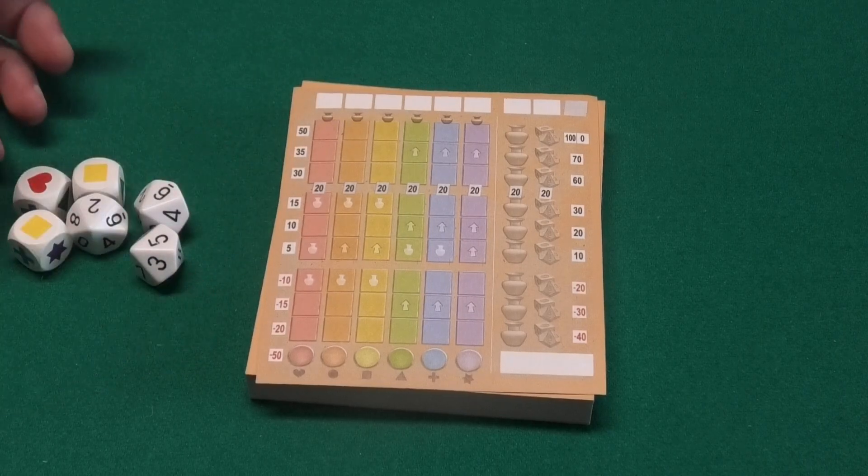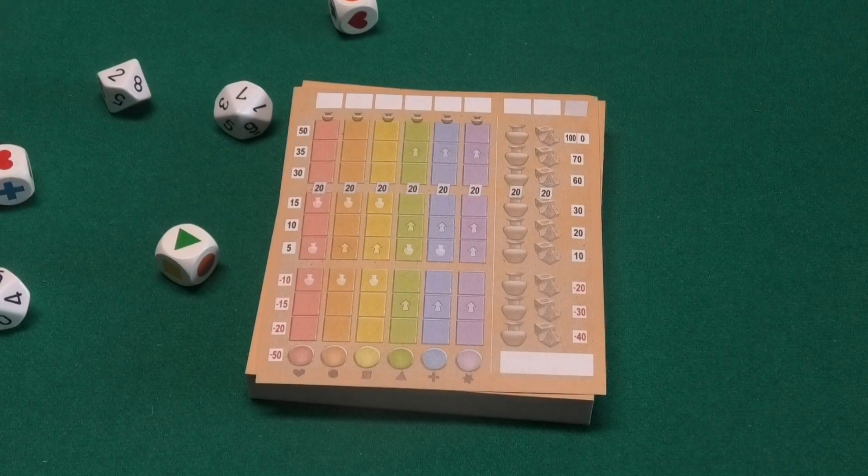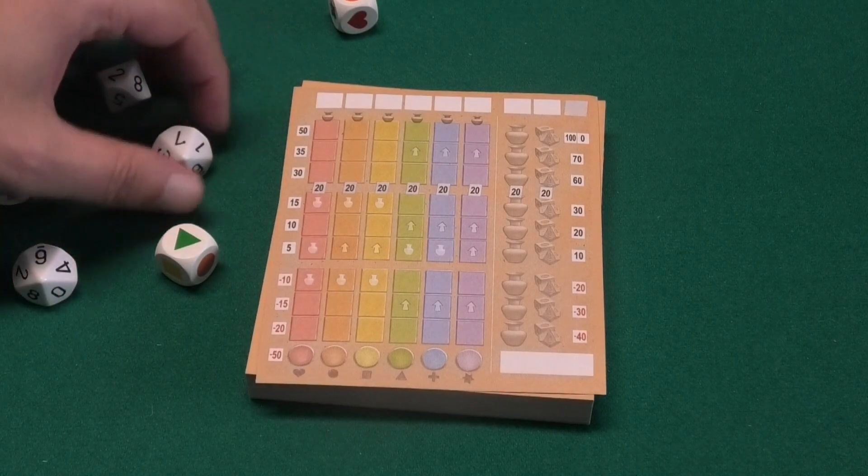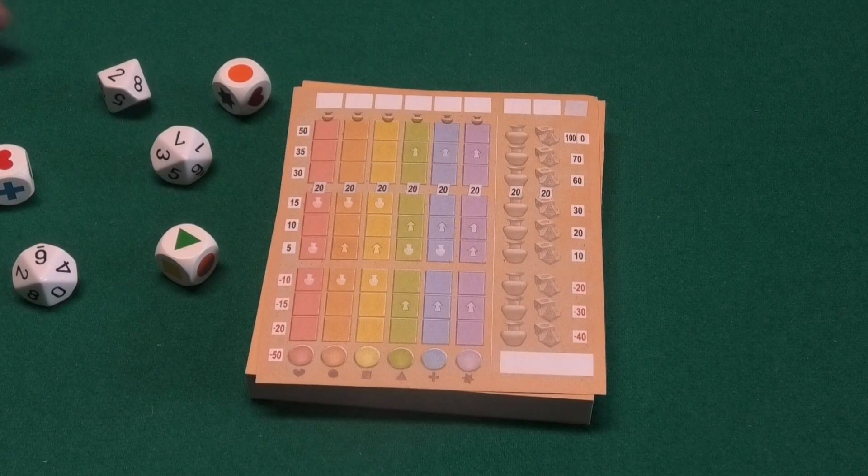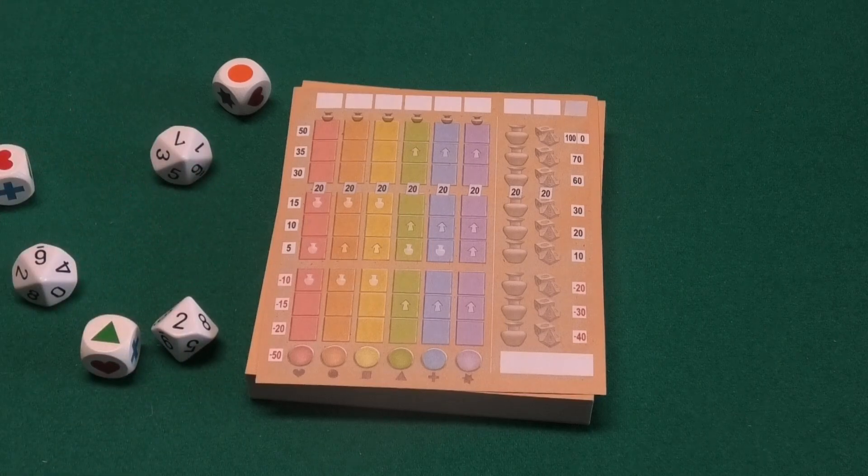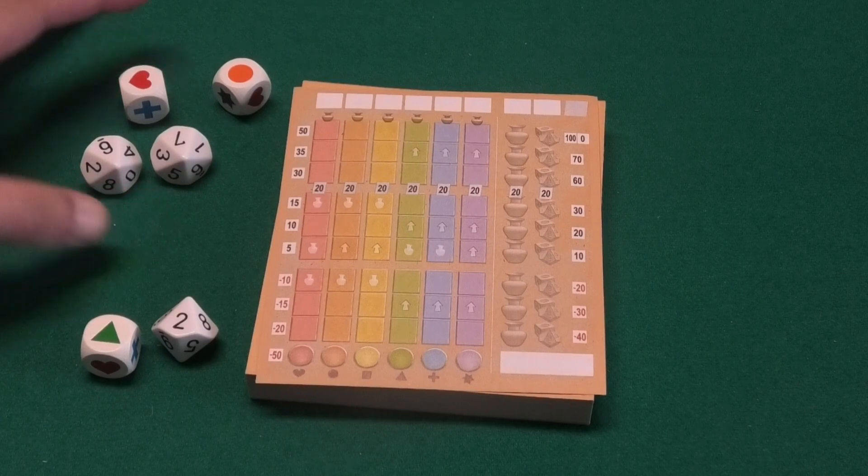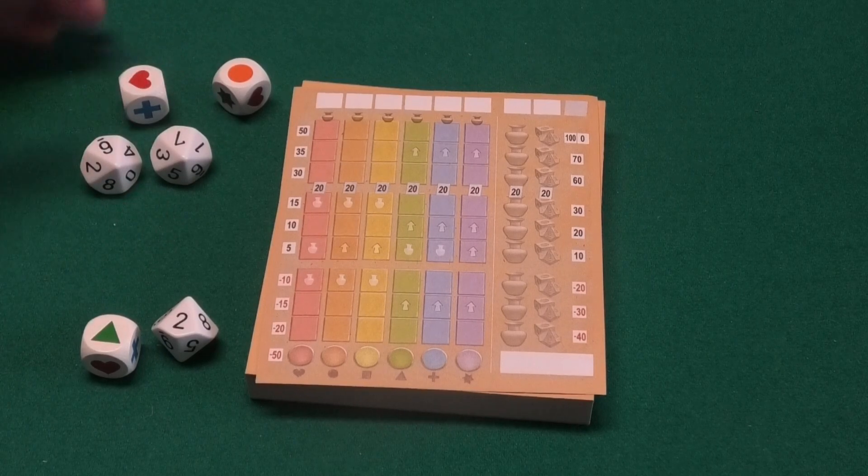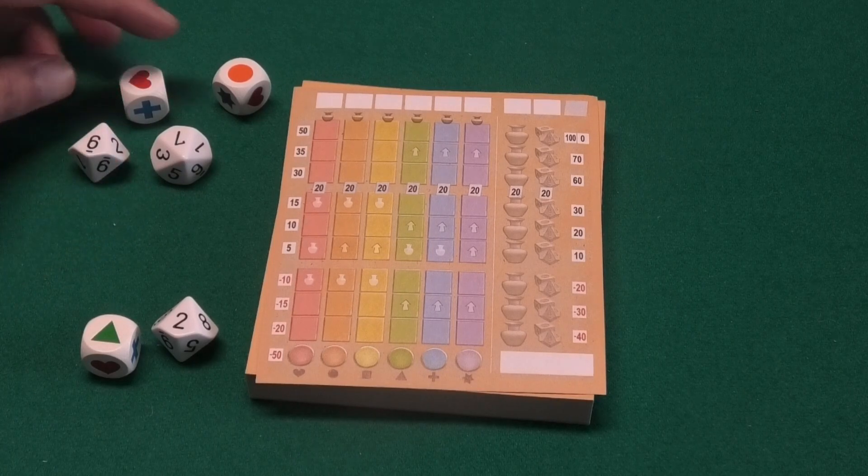The active player will simply roll all the dice and pick one combination of both a color and a number. So let's say for this example, number two green. The remaining dice will be for the other players to pick from to make their own combination. All other players can take the same combination if they want, so a seven or a six in orange or in red.